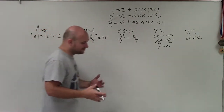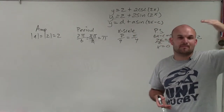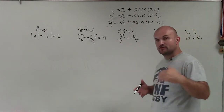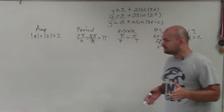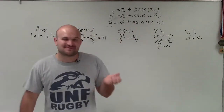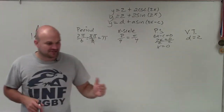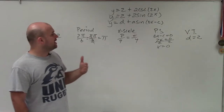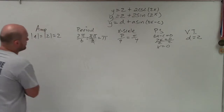Let's revise again. Amplitude tells us how high and low the graph goes — it's the half distance from the maximum to the minimum, so that distance is 2. The period is how long it takes for the graph to repeat itself. The x scale is the distance between each and every important point of the cycle. Phase shift is if you're shifting the graph left or right from its initial period. And vertical transformation is shifting the graph up or down. Now we have all the information, let's start plotting.